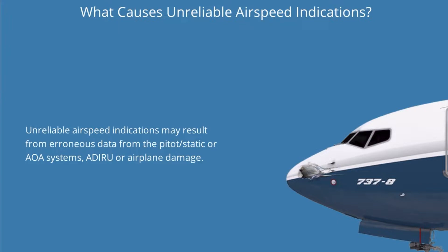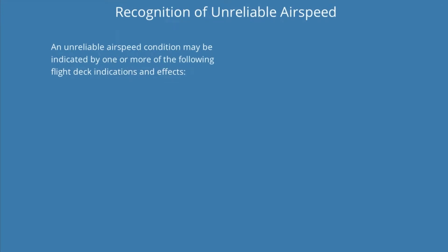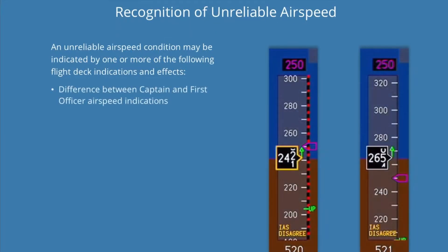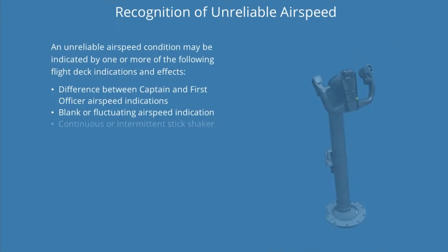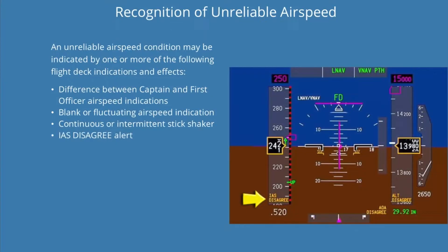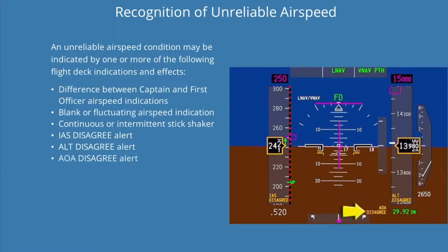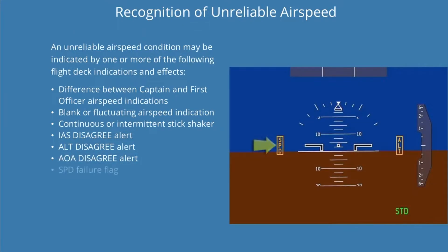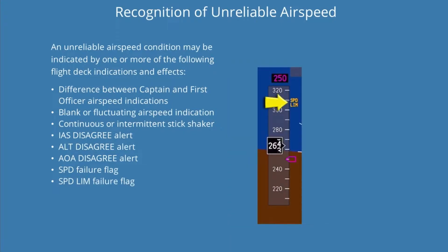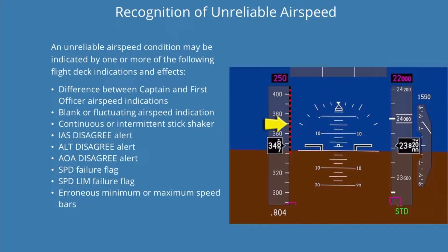Unreliable airspeed indications may result from erroneous data from the pitot-static or AOA systems, ADIRU, or airplane damage. An unreliable airspeed condition may be indicated by one or more of the following flight deck indications and effects: difference between captain and first officer airspeed indications, blank or fluctuating airspeed indication, continuous or intermittent stick shaker, indicated airspeed disagree alert, altitude disagree alert, angle of attack disagree alert, speed failure flag, and speed limit failure flag.